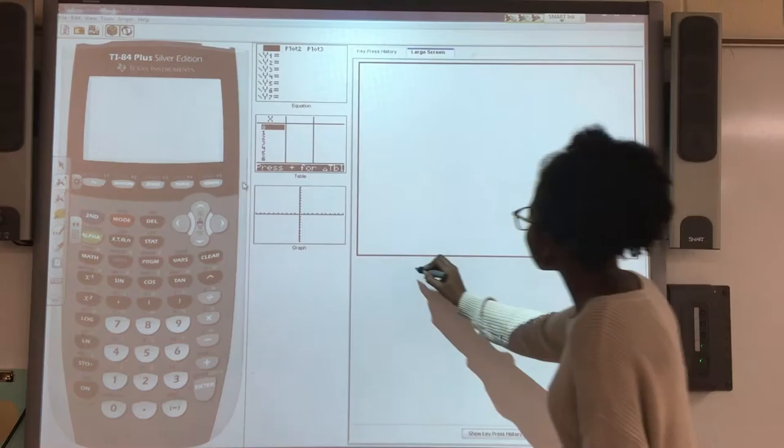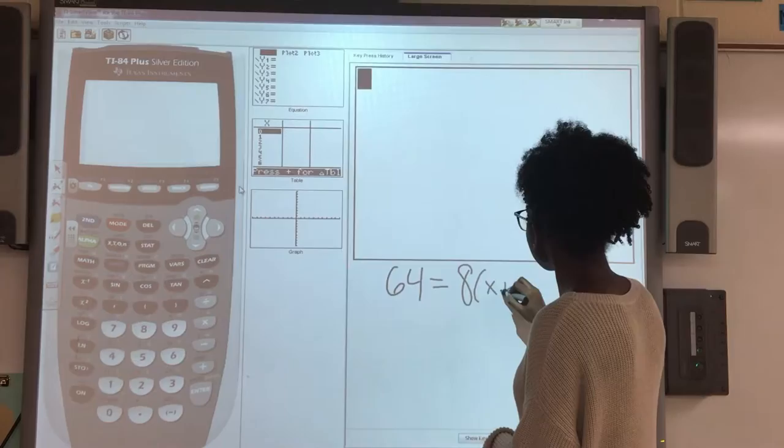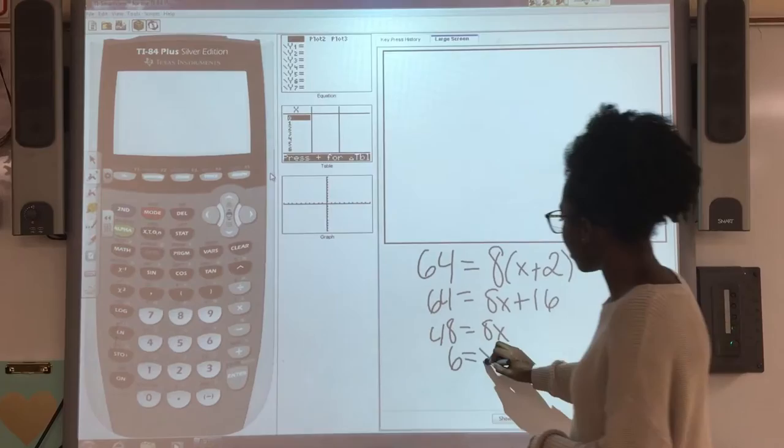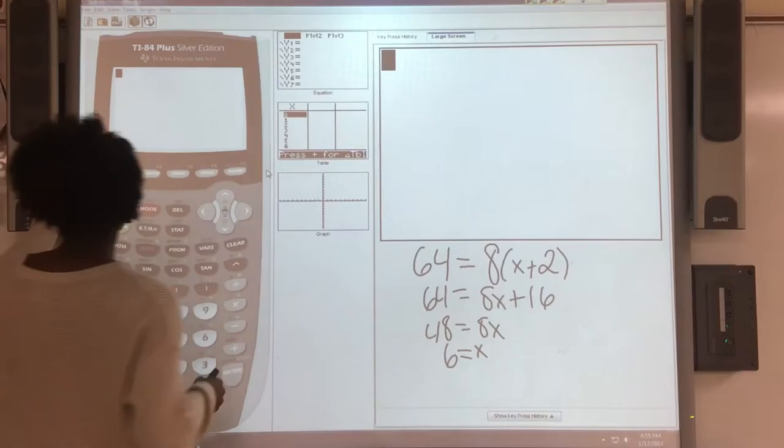The first equation I'm going to start with today is a simple linear equation: 64 equals 8 times x plus 2. When you solve this by hand, you would distribute the 8, subtract the 16, and divide by 8.